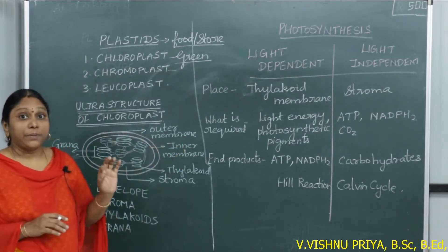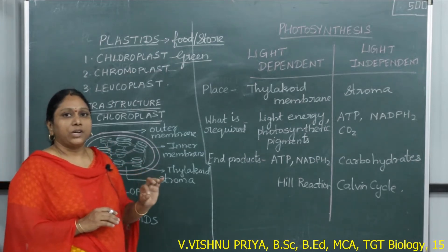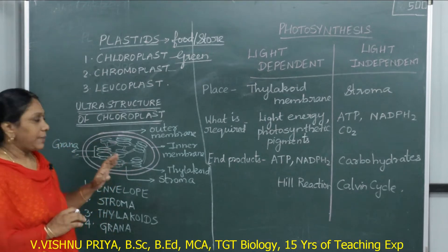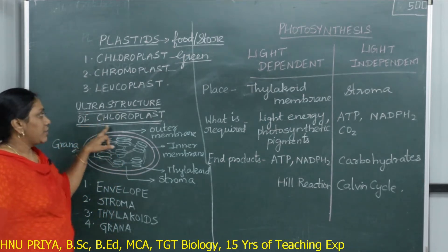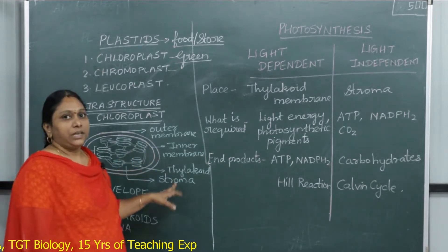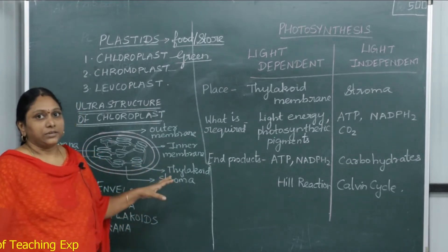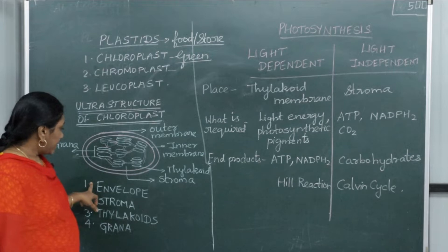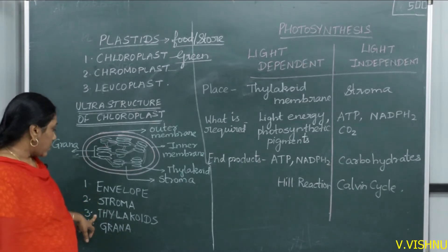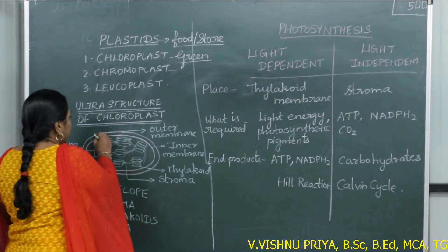Organelles are tiny living bodies present in a cell to carry out the functions of a cell. Now for the ultrastructure of chloroplast — this is a four-mark question. There are four things to remember: first is envelope, second is stroma, third is thylakoids, and fourth is grana.